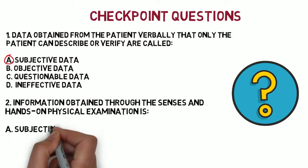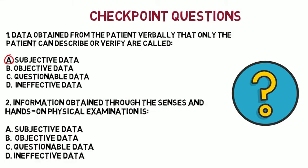Question 2: Information obtained through the senses and hands-on physical examination is: A. Subjective data, B. Objective data, C. Questionable data, or D. Ineffective data. The correct answer is B — Objective — because this is information you obtain by physical means and you can verify it. For example, a temperature of 100.5 is objective data because you can verify it using a thermometer.